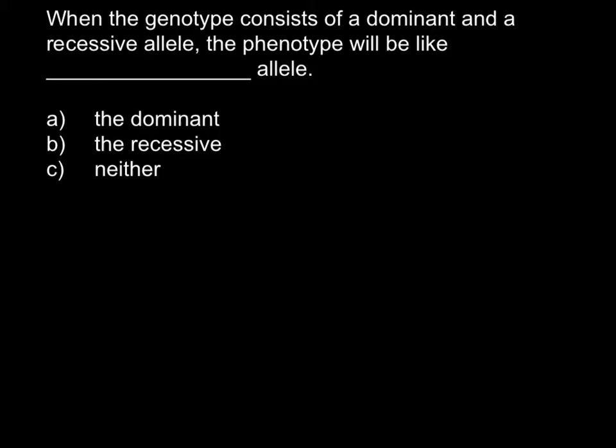When the genotype consists of a dominant and recessive allele, the phenotype will be like... And there are three different answers. You have to choose the correct answer.